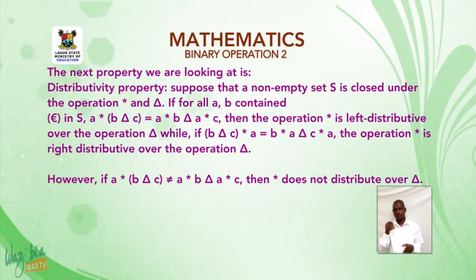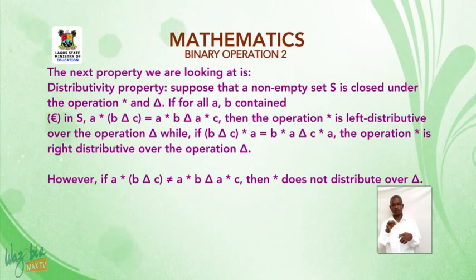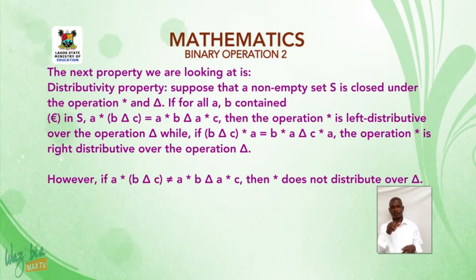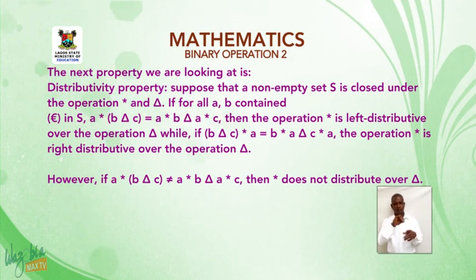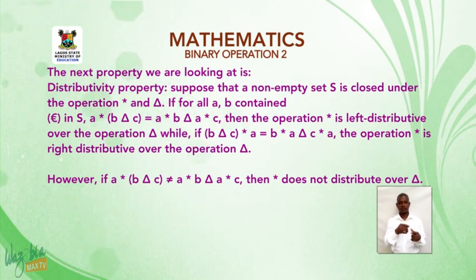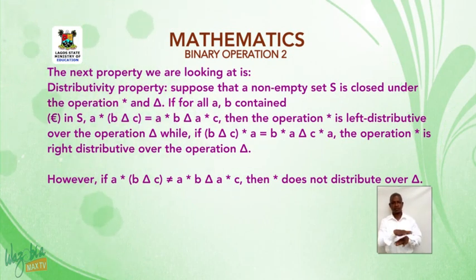While if (b Δ c)★a = (b★a) Δ (c★a), the operation is right distributive over the operation delta. However, if a★(b Δ c) ≠ (a★b) Δ (a★c), then star does not distribute over delta.